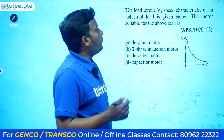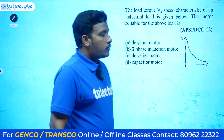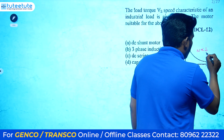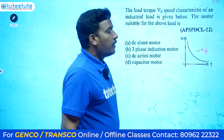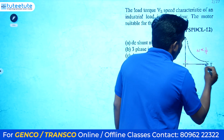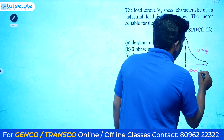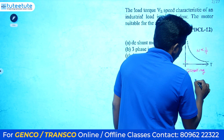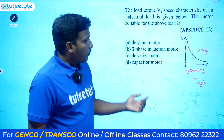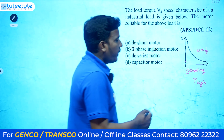The first question asks: the load torque versus speed characteristics of an industrial load is given below — which motor is suitable for this load? From the given characteristics we are going to write the equations. At the time of starting, the starting torque is high. From the given characteristics we can derive these two conditions.